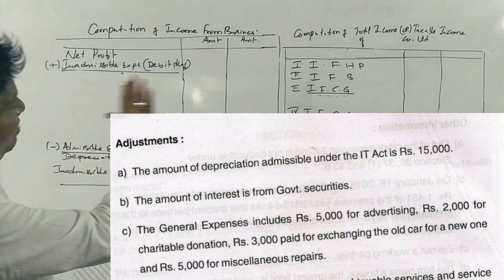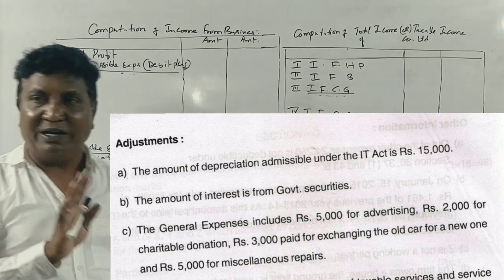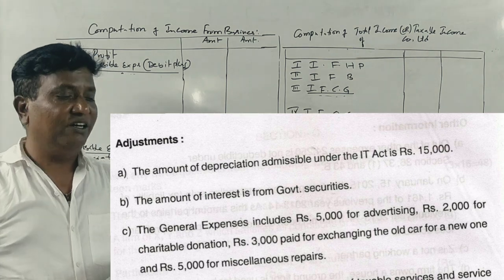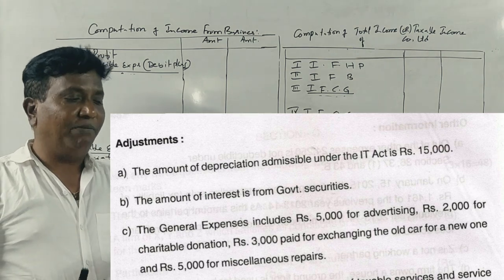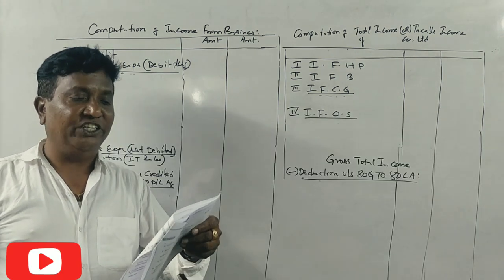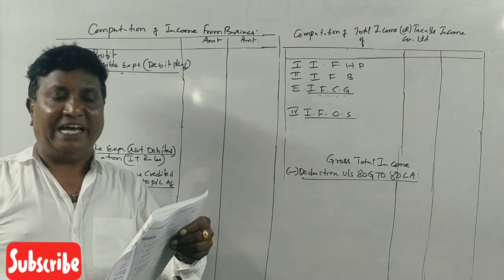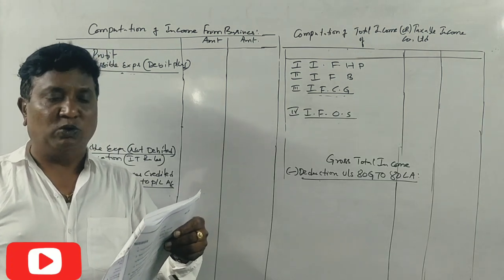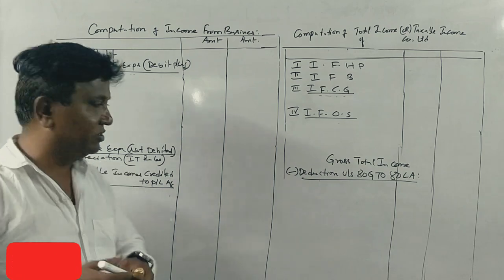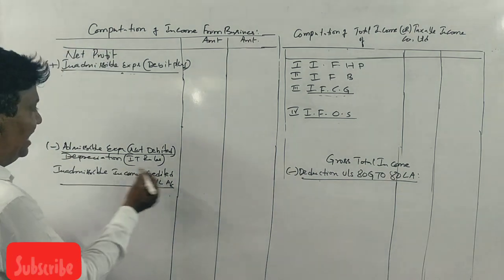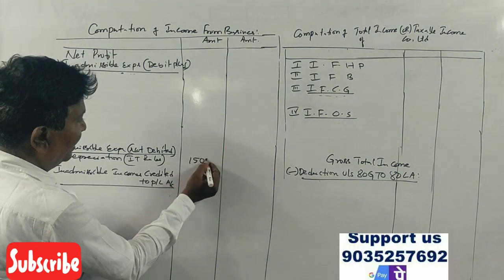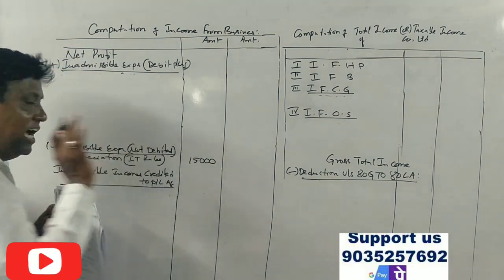The amount of depreciation admissible as per IT rules is 15,000. So depreciation as per IT rules equals 15,000.